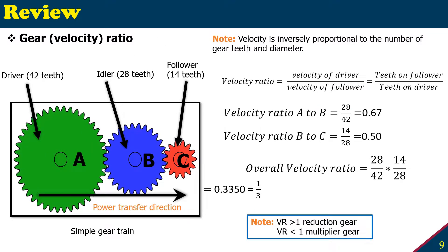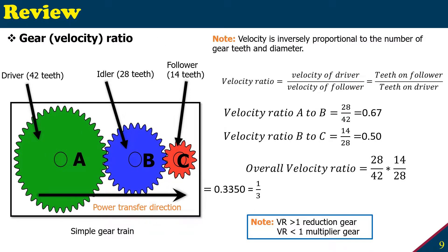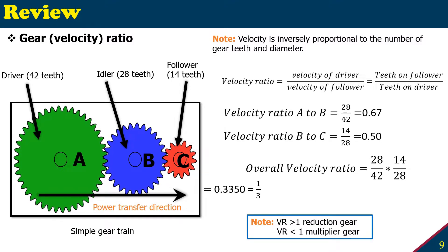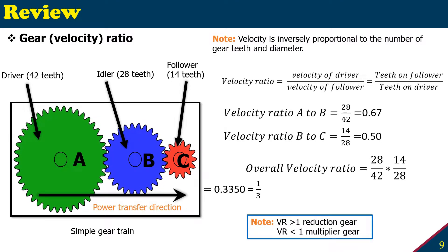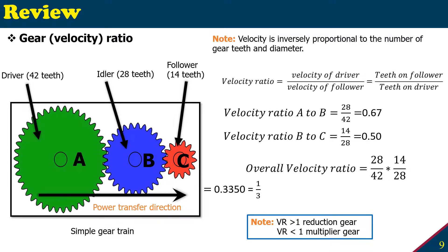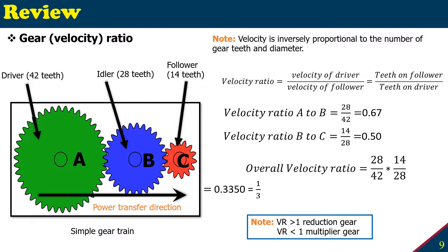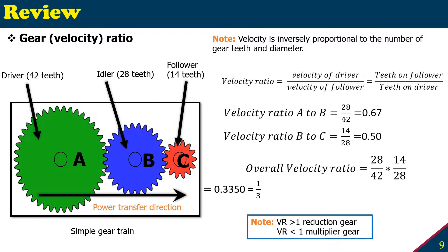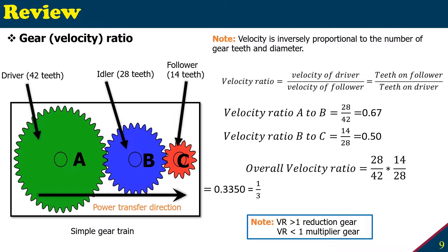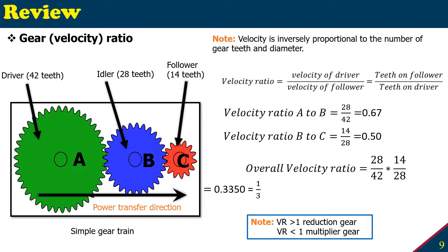We're going to learn about the gear ratio, or we can also call it velocity ratio. The velocity is inversely proportional to the number of gear teeth and the diameter, so the more teeth you have or the bigger the diameter of the gear, the less is the velocity.